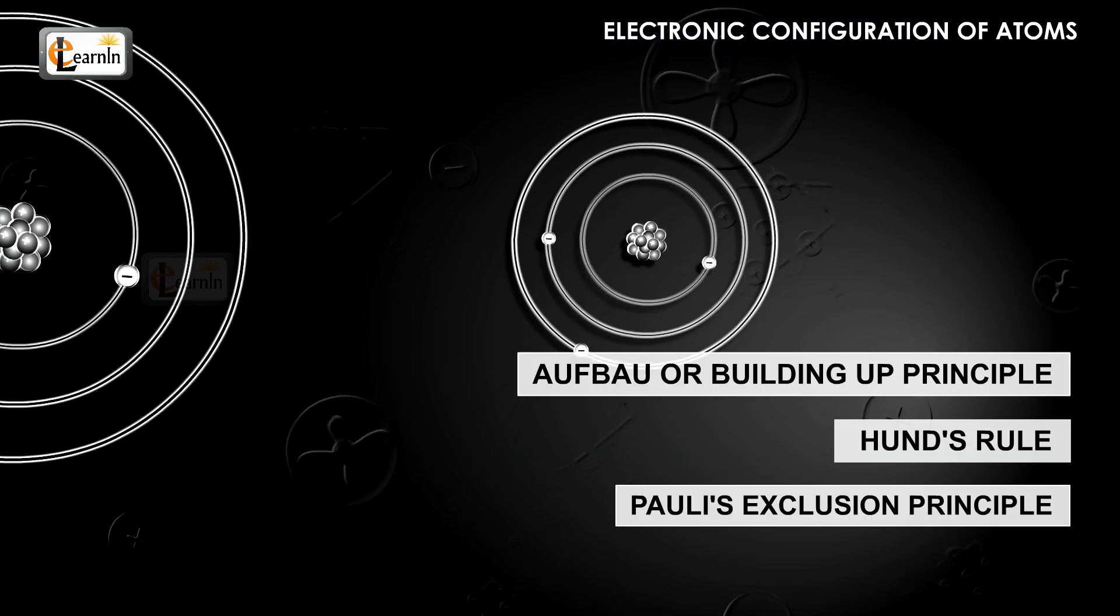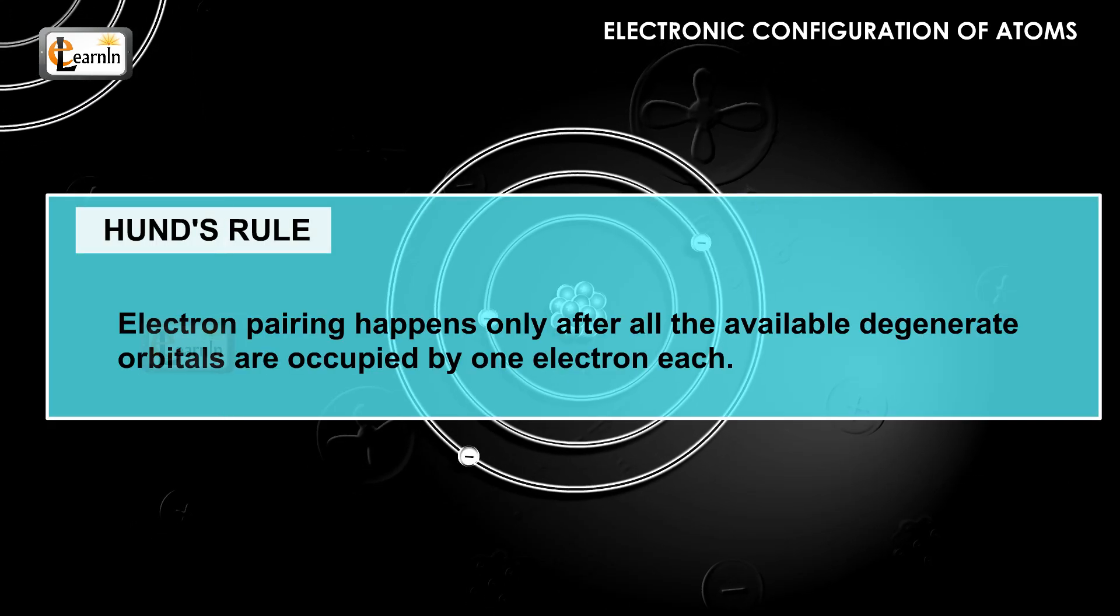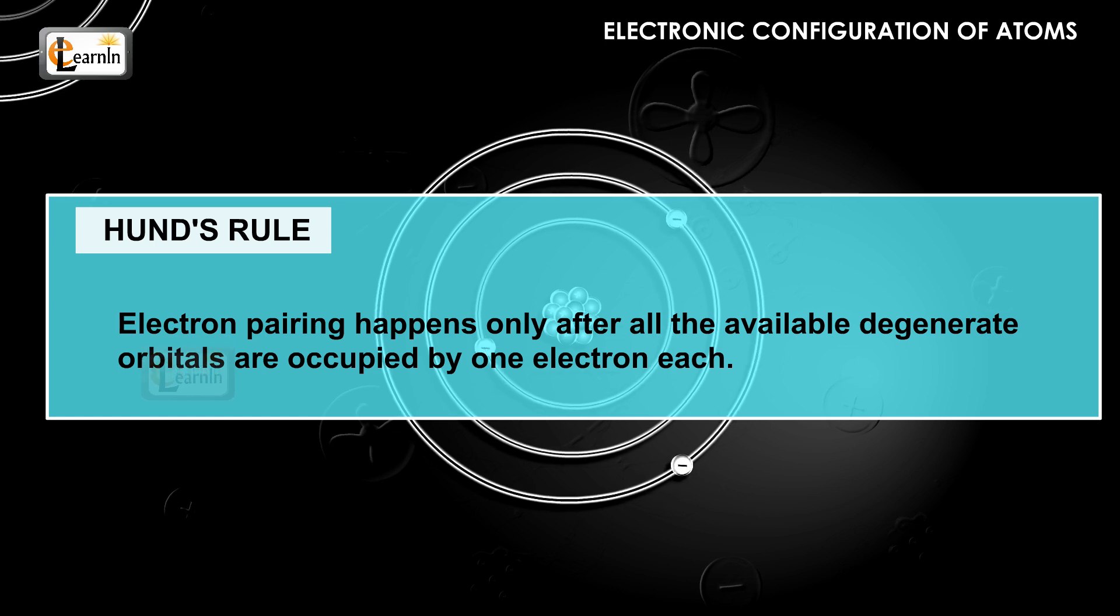The second important rule to determine the electronic configuration of an atom is Hund's rule. It says the electron pairing happens only after all the available degenerate orbitals are occupied by one electron each.